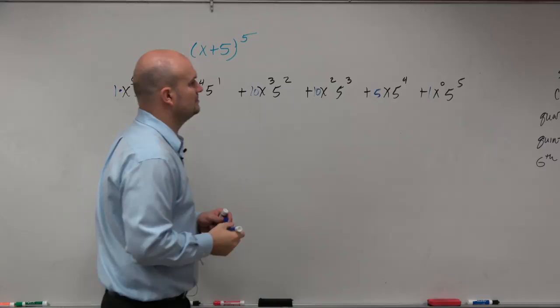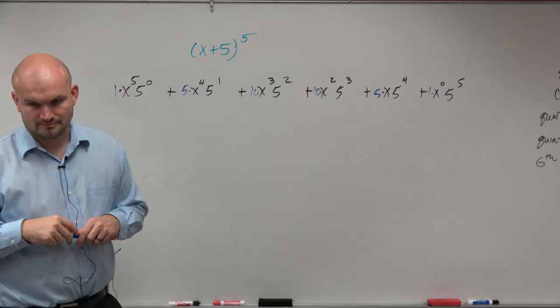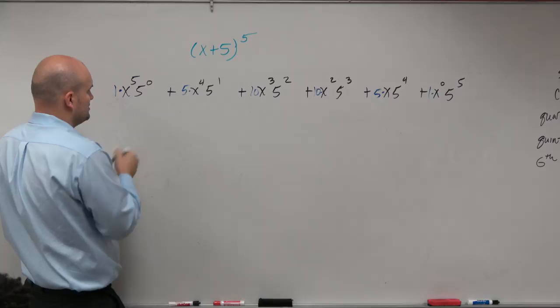Now, again, these are all multiplied. Does everybody see that? Yes? Hold on, why'd you add that one? Where? Because it's 5 to the 0 is 1. Yeah, no, I haven't simplified it yet.